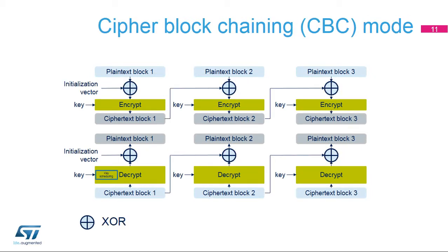In CBC mode, each block of plain text is XORed with the previous ciphertext block before being encrypted. To make each message unique, an initialisation vector is used during the first block processing. For a CBC decryption, a key for the first round of decryption must be derived from the key of the last round of encryption. This is why a complete key schedule of encryption is required before performing the decryption.